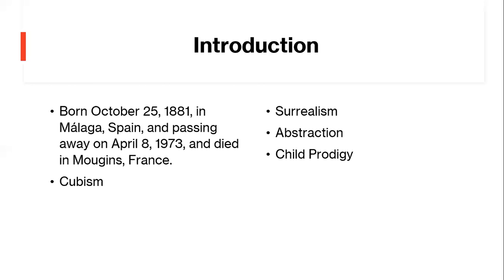Pablo Picasso's artistic journey began in the late 19th century, a period marked by profound societal and artistic shifts. He was born during a time when Spain was transitioning from a monarchy to a republic, and this political turbulence had a strong lasting impact on his work. By the early 20th century, when Picasso had relocated to Paris, Europe was on the cusp of major transformations, including the outbreak of World War I and the ensuing turbulence of the interwar years. Picasso's art would reflect the trauma, upheaval, and innovations of his era.